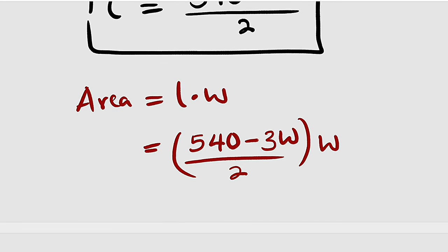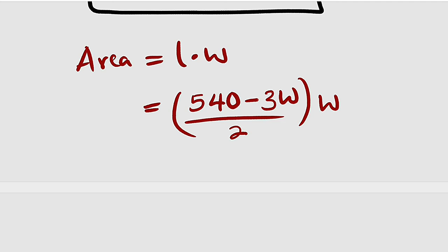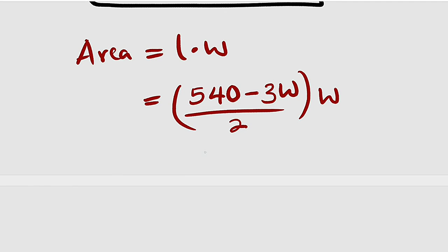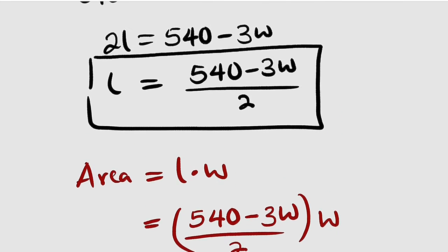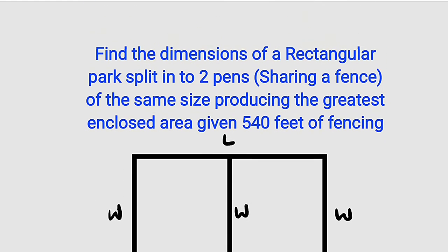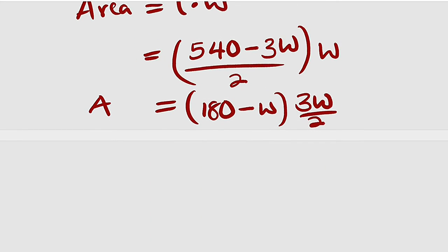Let's factor out something here. We can factor out, giving us (180 minus 3w/3) which simplifies, and we want to factor out 2 here. Already we have 3w divided by 2. This is our area expression. But remember that we are talking about the greatest area, so what value of w will make the greatest area? That is what we need to find.